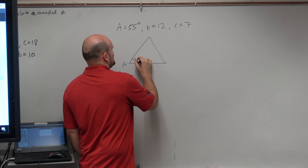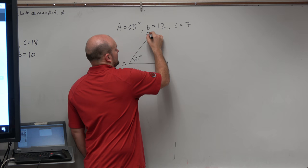So we have angle A, which is 55 degrees. We don't know side a over there. We could say here's b, which is 12, and then we could say big C, and that's 7.